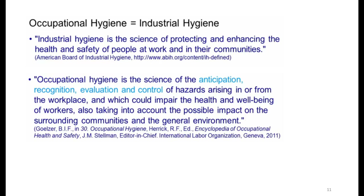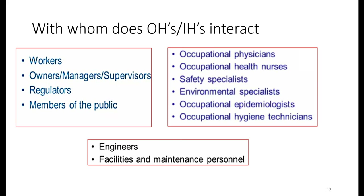Industrial hygiene is the science of protecting and enhancing the health and safety of people at work and in their communities. Occupational hygiene is the science of anticipation, recognition, evaluation, and control of hazards arising from the workplace that could impair health and well-being of workers, also taking into account the possible impact on surrounding communities. Industrial hygienists (IH) interact with workers, owners, managers, supervisors, regulators, occupational physicians, health nurses, safety specialists, environmental specialists, and epidemiologists.